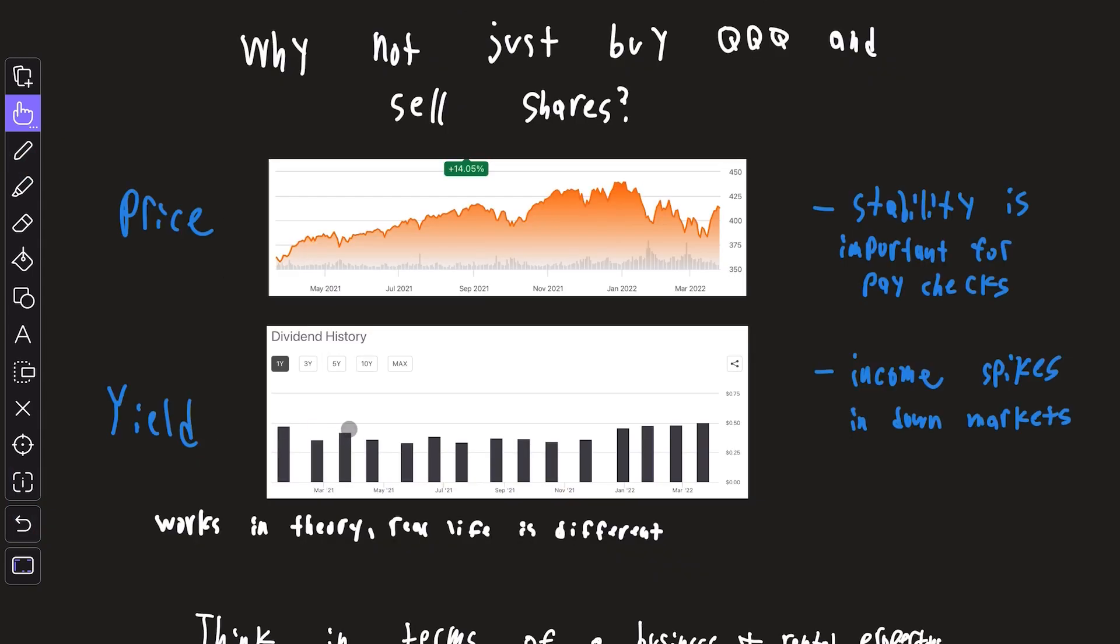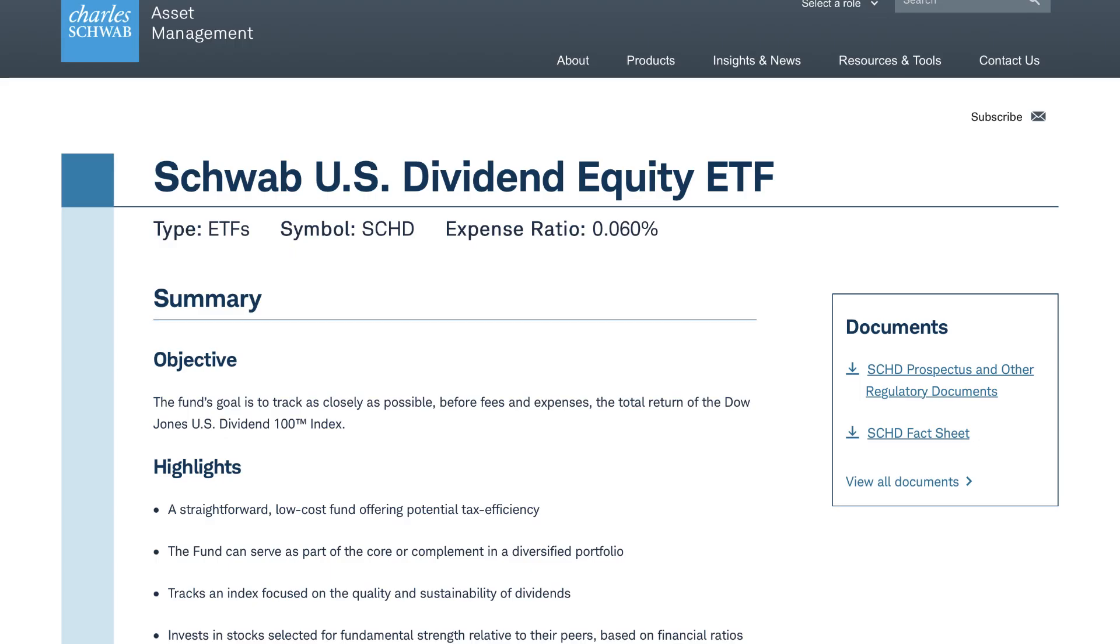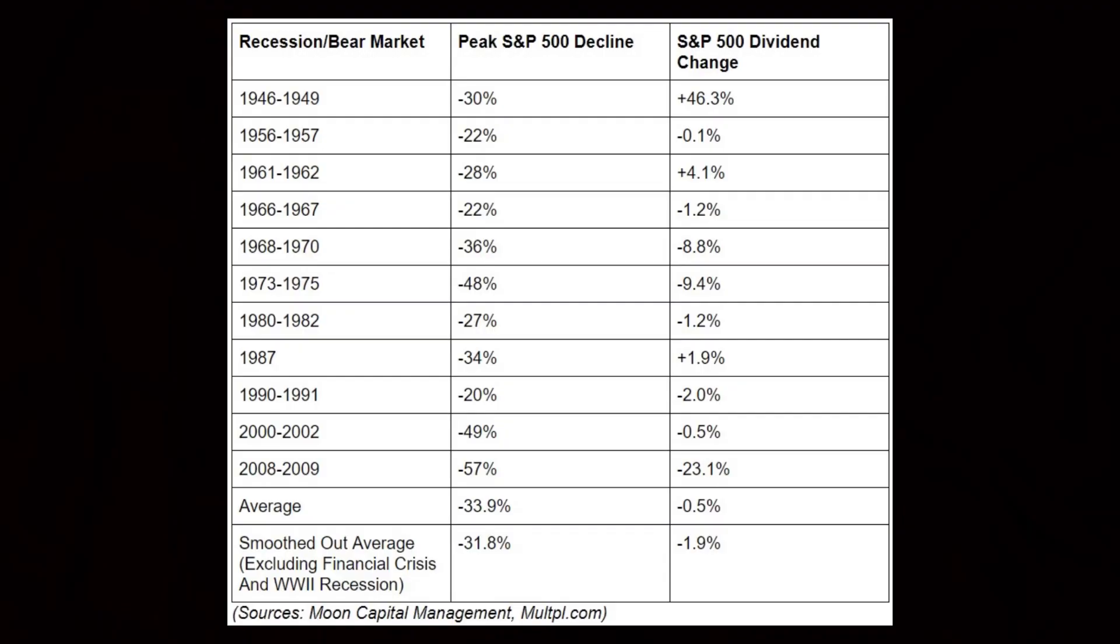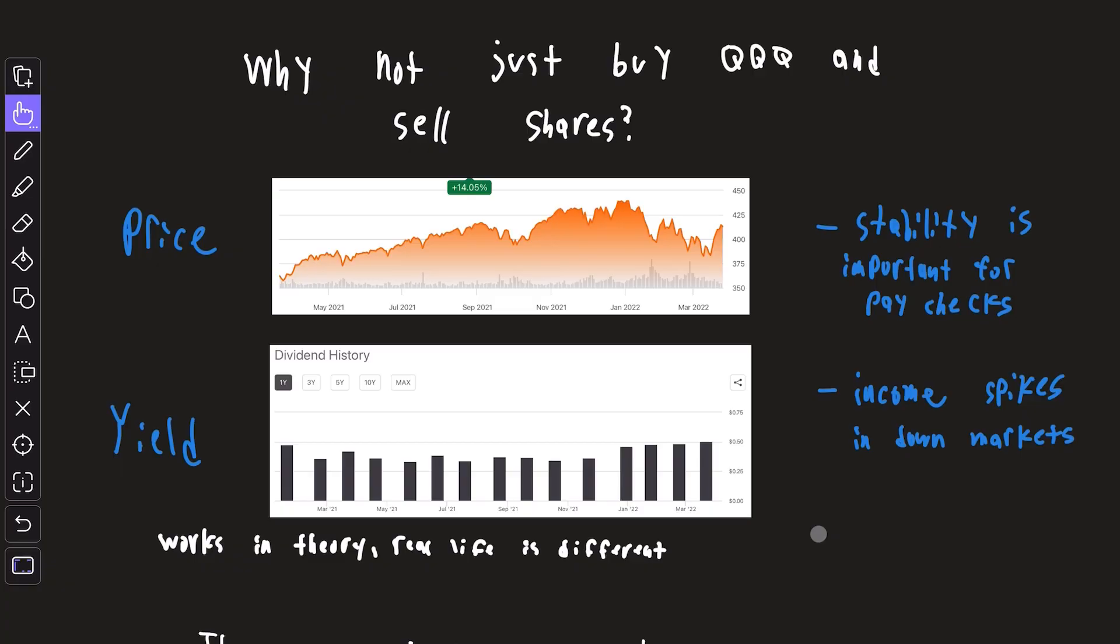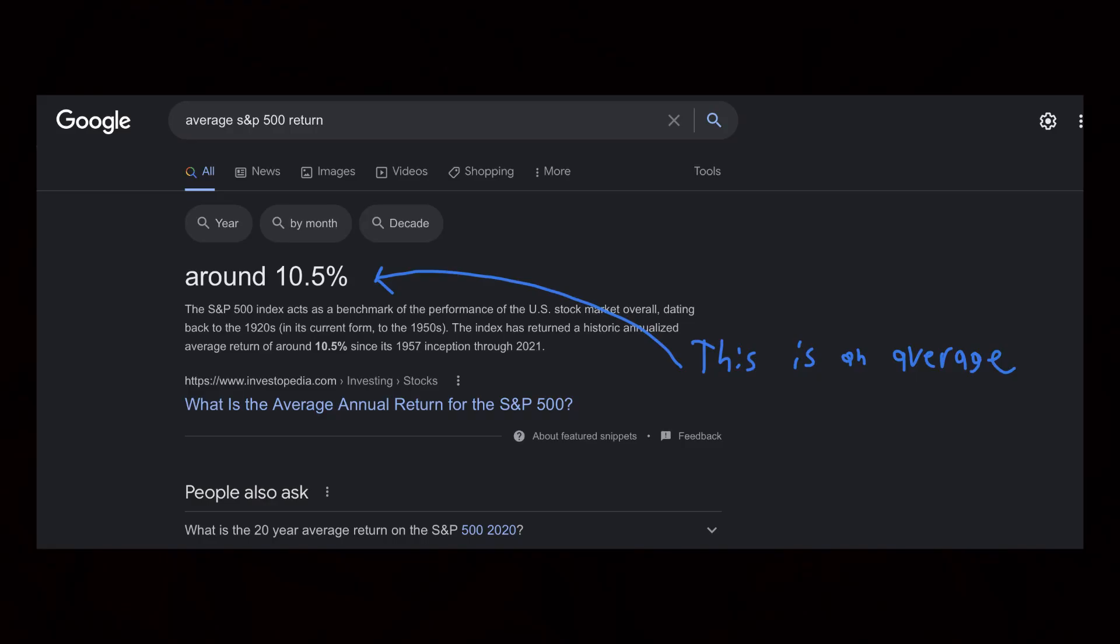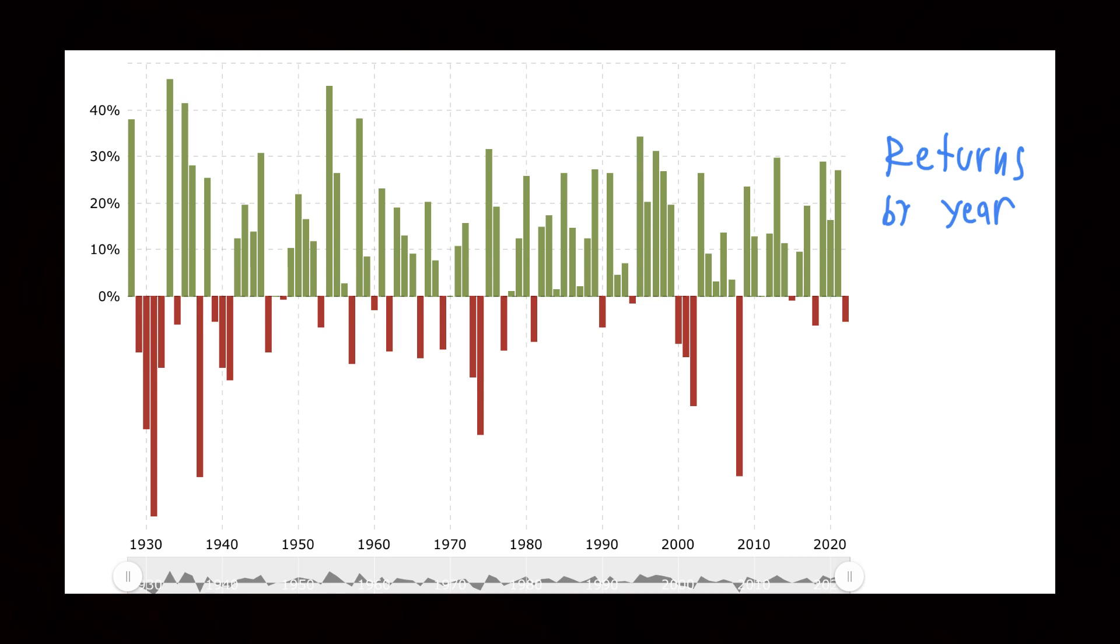And even putting XYLD aside and looking at actual dividends from say SCHD, the reliability of those dividend payments is way more than the price action of a stock. So yes, in theory selling shares might be the same as dividend payments, but real life is very different. Things like stability are very important when it comes to income, especially during volatile periods in the market.